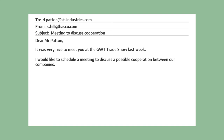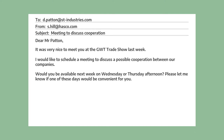This is the reason for writing the email — very polite: "I would like to schedule." And then she also explains what the meeting should be about: "A meeting to discuss a possible cooperation between our companies." Then she writes, "Would you be available next week on Wednesday or Thursday afternoon? Please let me know if one of these days would be convenient for you." So here she's using "would," which is a polite form, to ask about availability and suggest times.